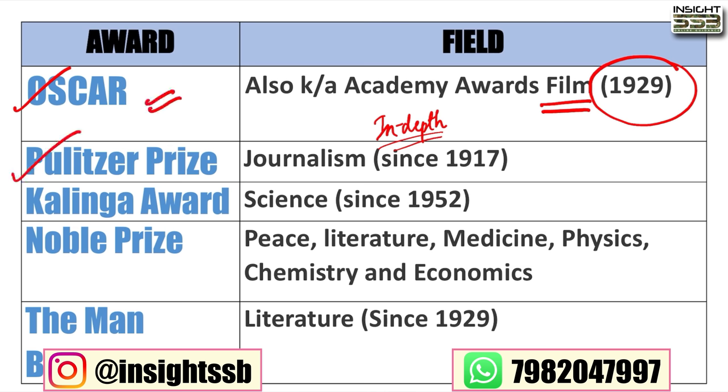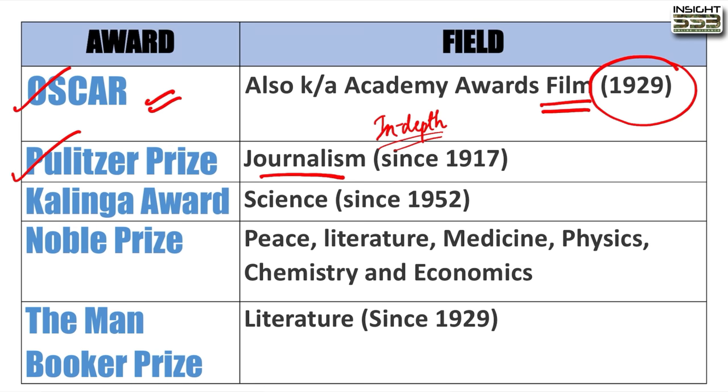Pulitzer Prize — Pulitzer Prize is given for journalism, and has been given from 1917 onwards.